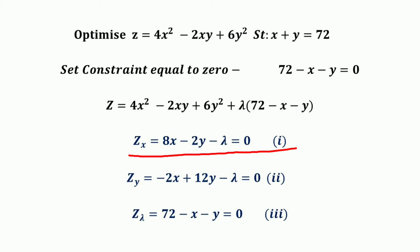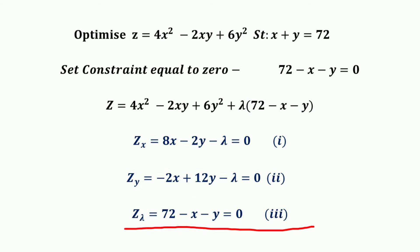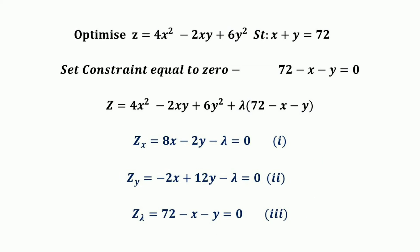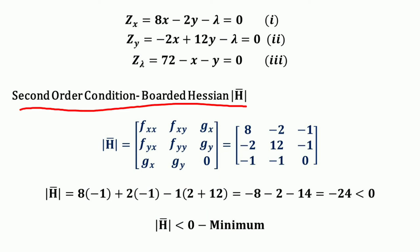The first-order partial derivative with respect to x gives: 8x − 2y − λ = 0 (equation 1). The partial derivative with respect to y gives: −2x + 12y − λ = 0 (equation 2). Differentiating with respect to lambda gives: 72 − x − y = 0 (equation 3). We solve these three equations simultaneously to find the critical values of x, y, and lambda. The Bordered Hessian can then be used to determine whether z is a maximum or minimum.